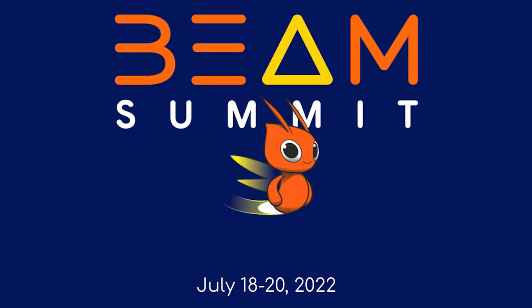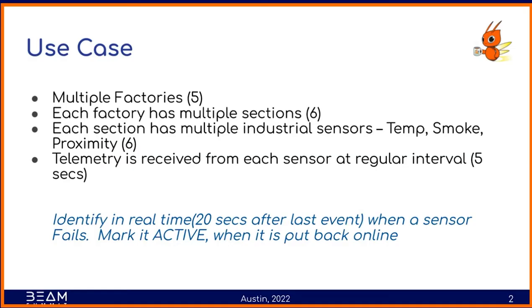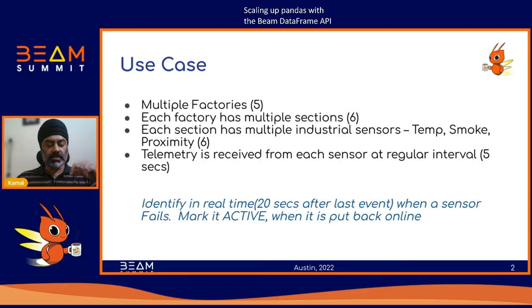This talk is about identifying the failure of IoT sensors which may be spread across various install locations. The scenario is: you have multiple IoT sensors, potentially hundreds or thousands, spread across multiple factories. Each factory has multiple sections, and each section can have multiple sensors — for example, temperature sensors, smoke sensors, and proximity sensors.